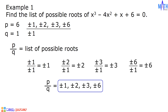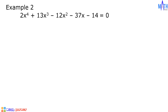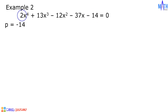Next example: 2x raised to the 4th power plus 13x cubed minus 12x squared minus 37x minus 14 equals 0. Let us find the list of possible roots of this polynomial equation. In this example, the constant term is negative 14 and the leading coefficient is positive 2.